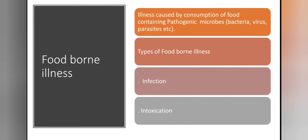For food infection, we have an example of Campylobacter jejuni. When we talk about food intoxication, we have an example of mycotoxins that are produced by fungi, or when we talk about bacteria, we have the example of Bacillus cereus. So these are some examples of food infection and food intoxication.